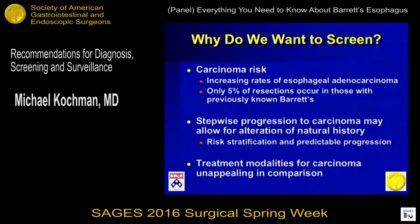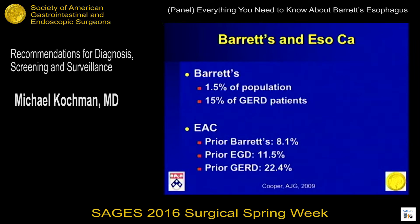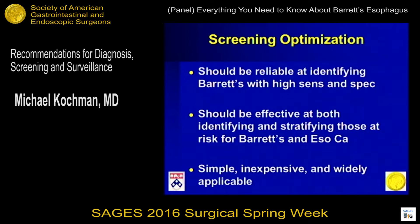Screening — carcinoma risk is clear, and Barrett's is underdiagnosed. The treatment modalities for endoscopic intramucosal carcinoma and high-grade dysplasia are much more appealing than the alternatives. Unfortunately, only 1.5% of the population is found to have Barrett's up front, but in esophageal adenocarcinoma, only 8% were found to have prior Barrett's and only 11% had a prior EGD. About 22% did have reflux symptoms. Screening should be reliable with high sensitivity and specificity, effective at identifying those with Barrett's and early carcinoma, simple, and widely applicable.